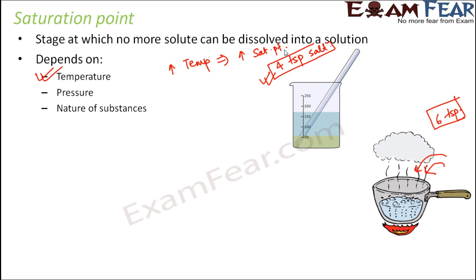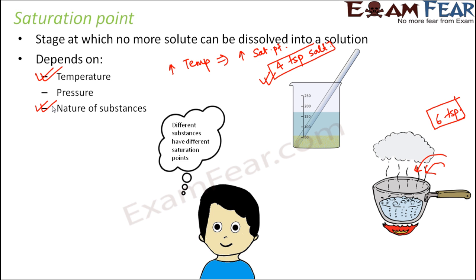The next factor is the nature of the substances. The substance which we are adding to water, whether it is sugar or salt or something else, that also decides the saturation point. Maybe the saturation point for a glass of water in case of salt could be 4 teaspoons, but in case of sugar it might be 2 teaspoons. For some other substance it might be 10 teaspoons. So different substances have different saturation points.